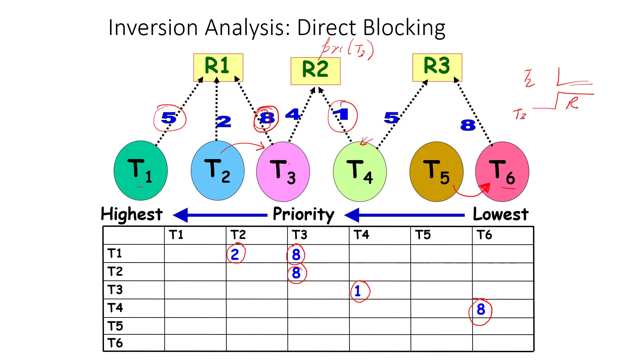When T3 comes, it finds that it is not the task to have set the current ceiling, and furthermore its priority is not greater than the current system ceiling. It needs access to R1, which is of course free in this case, but it will not get access to R1 because of this ceiling issue. Because it has not set the current ceiling and it's not greater than the current ceiling, T3 will have to wait for T4 to complete, which is one time unit. This will be an avoidance related inversion.